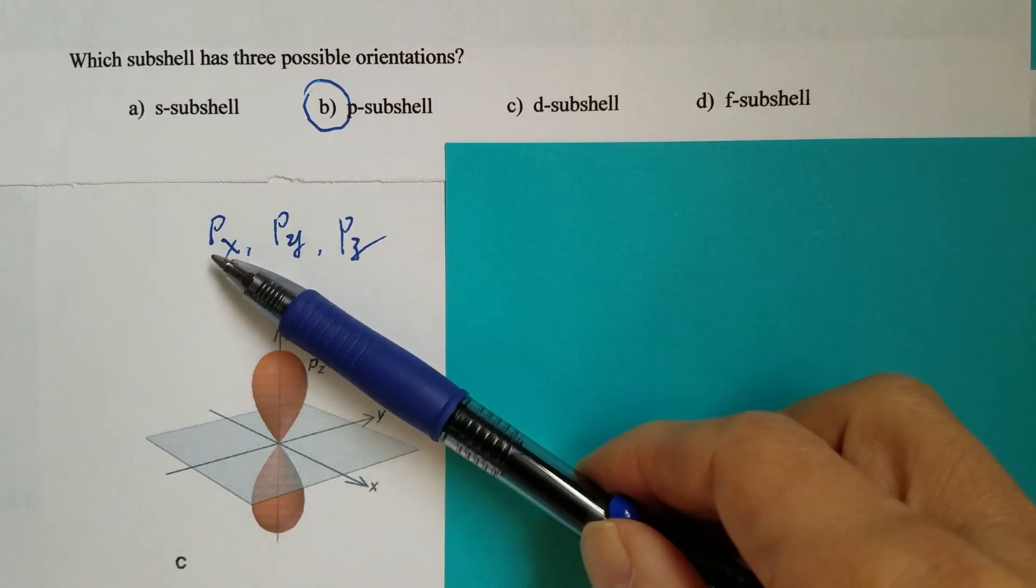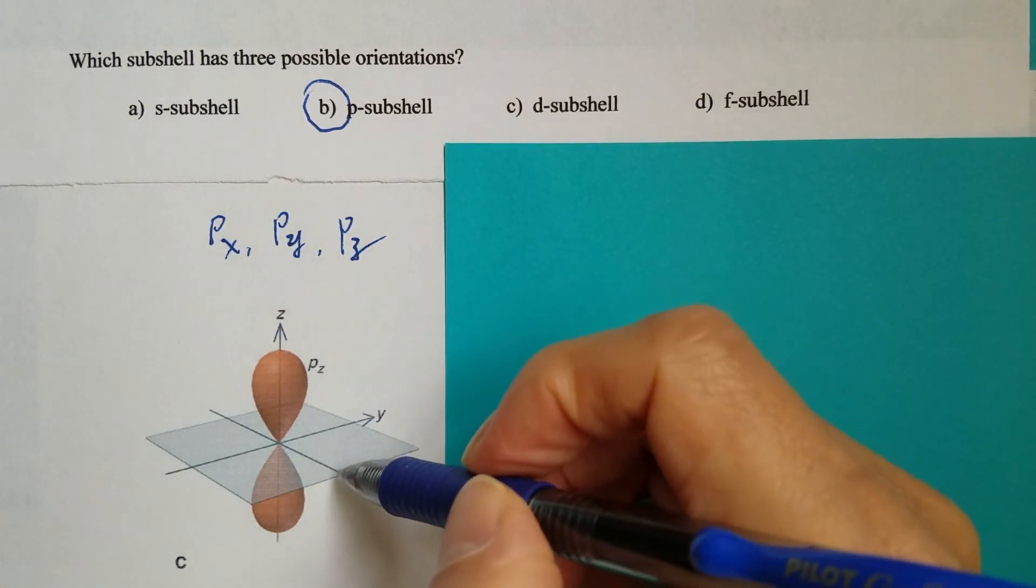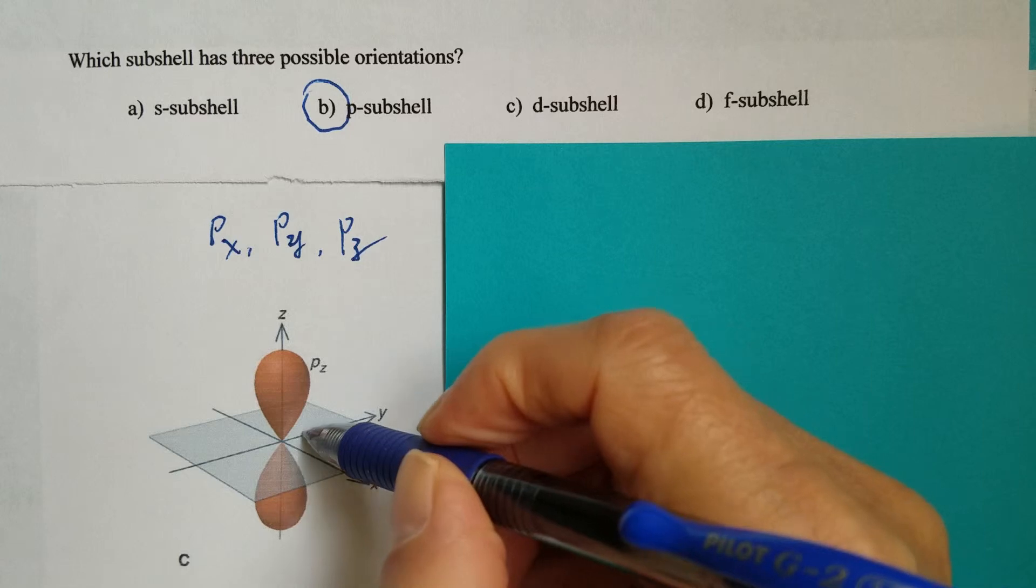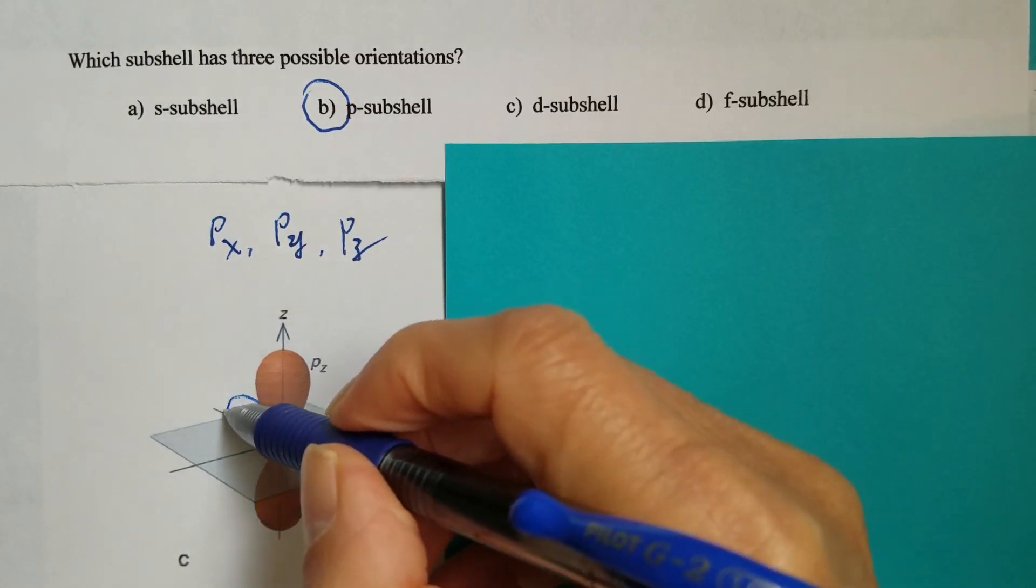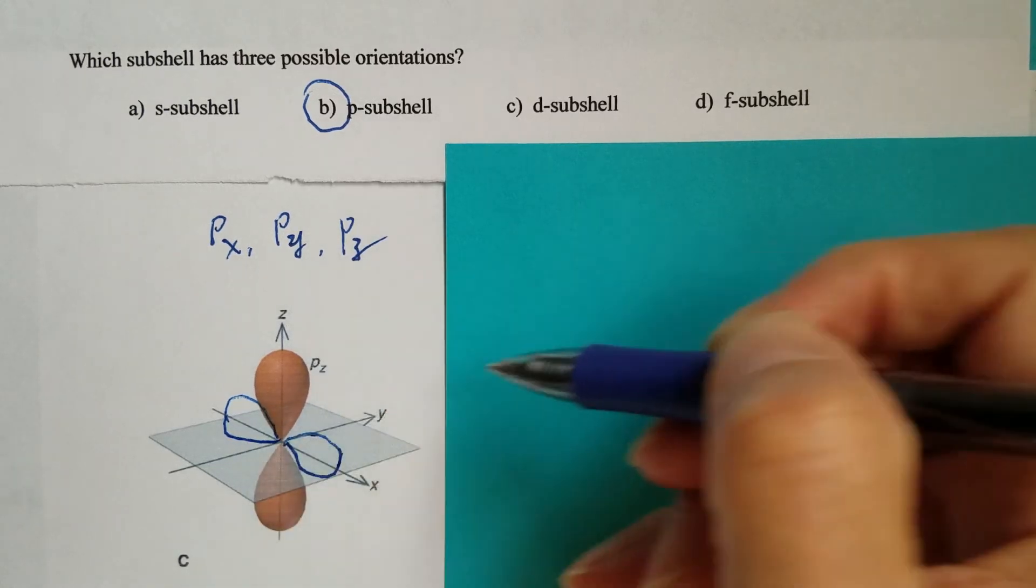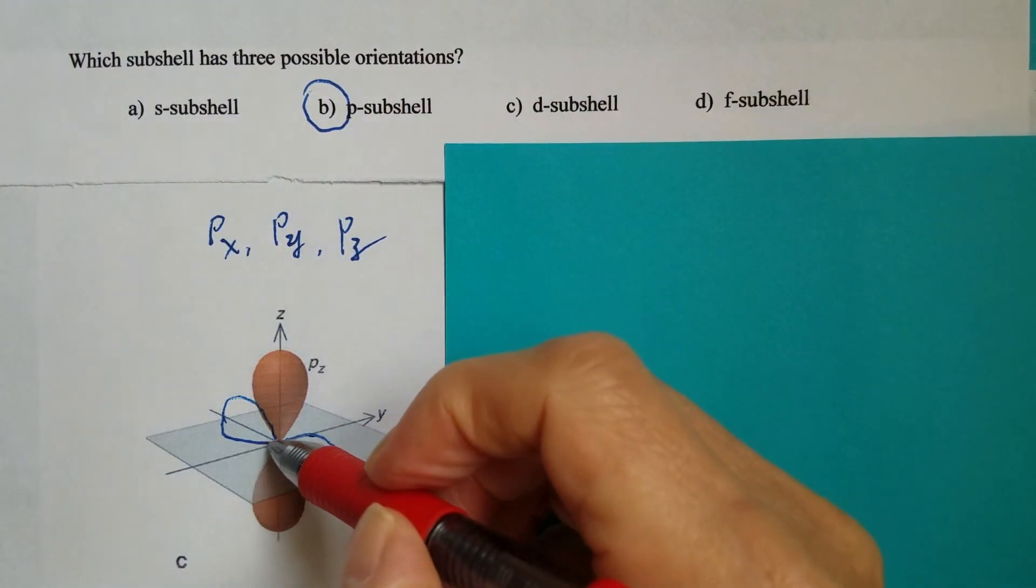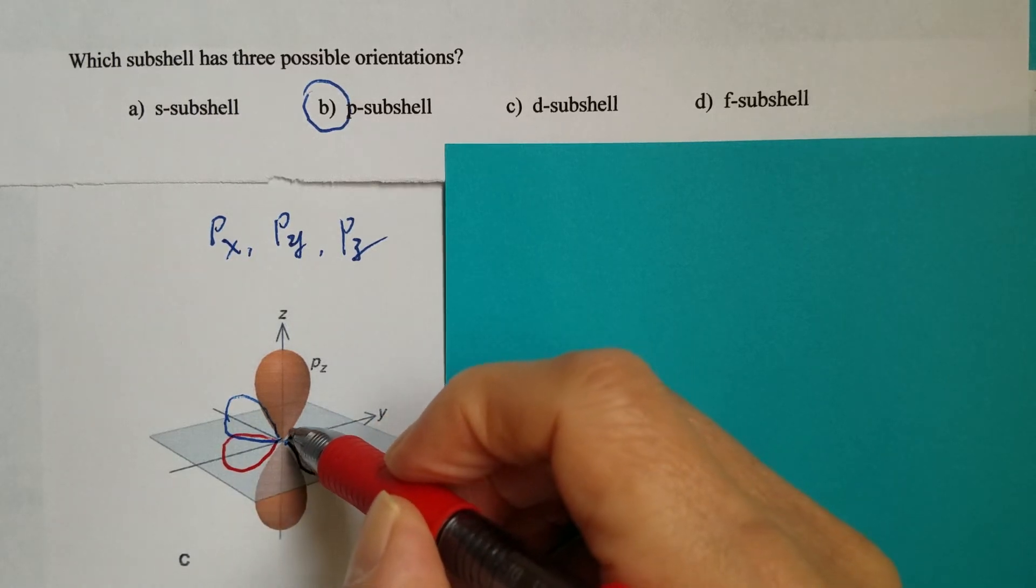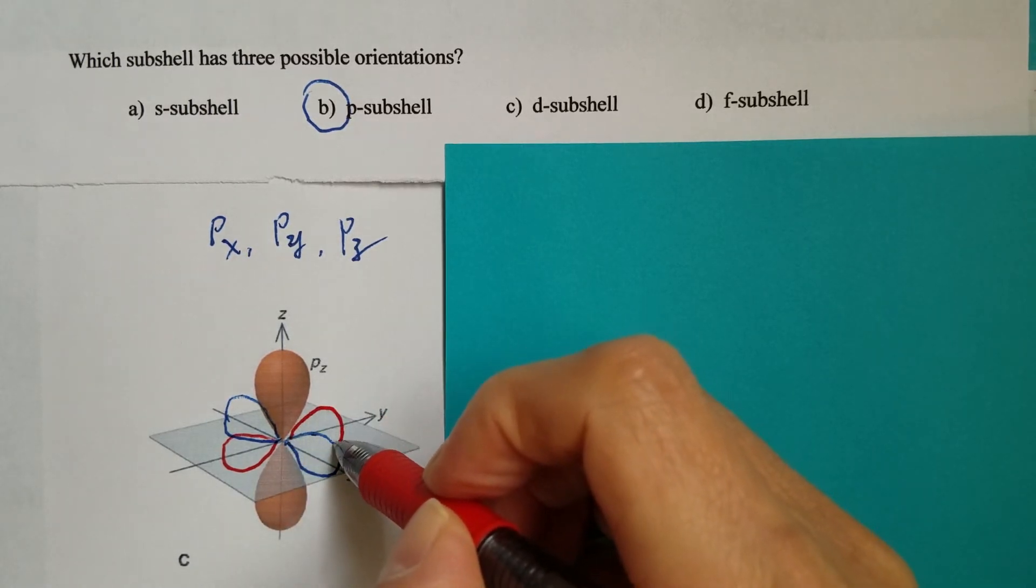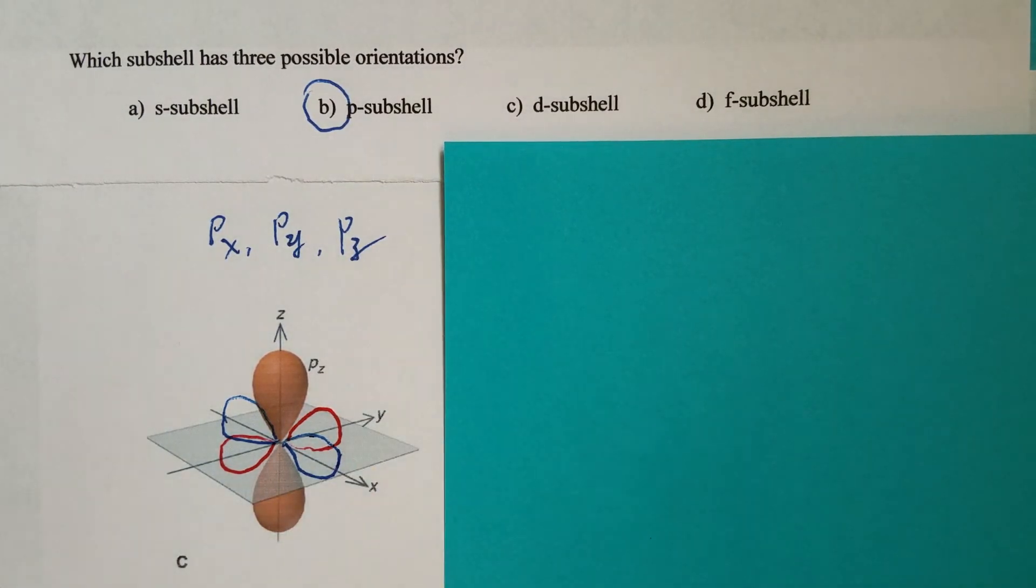So then which one is Px? Px, the two lobes have to be along the x-axis. That's the Px.